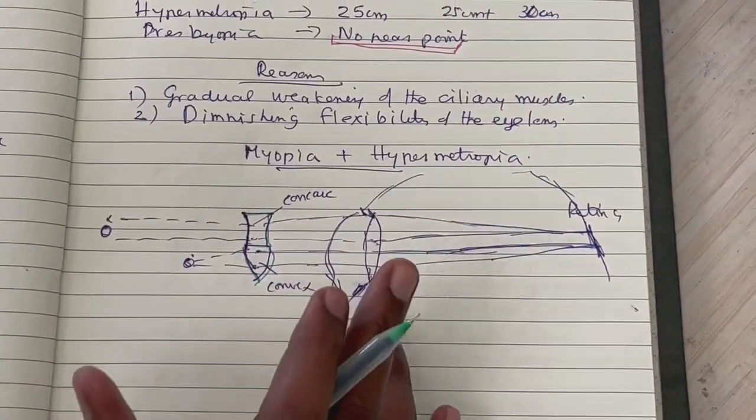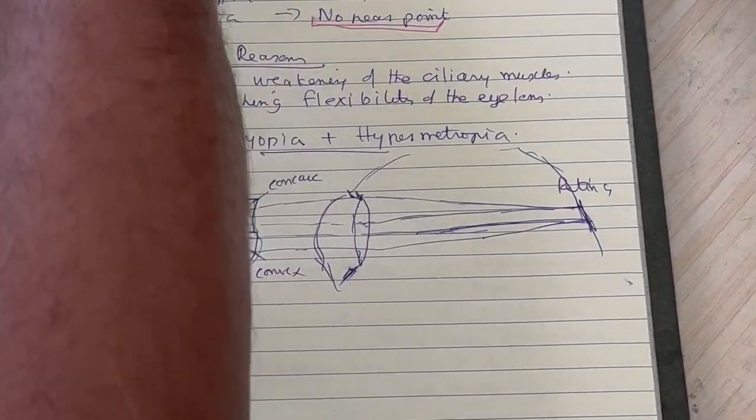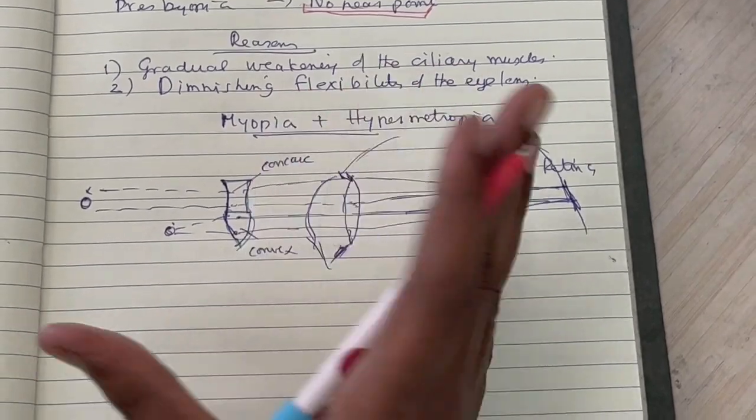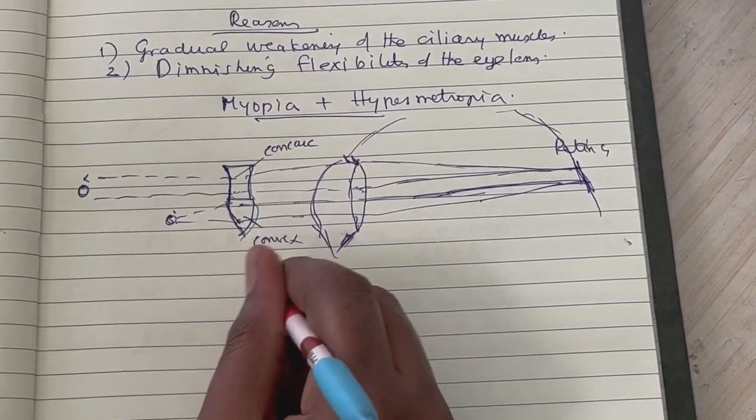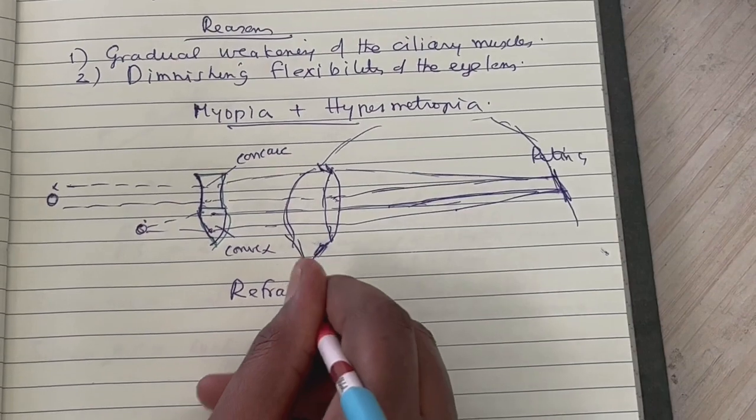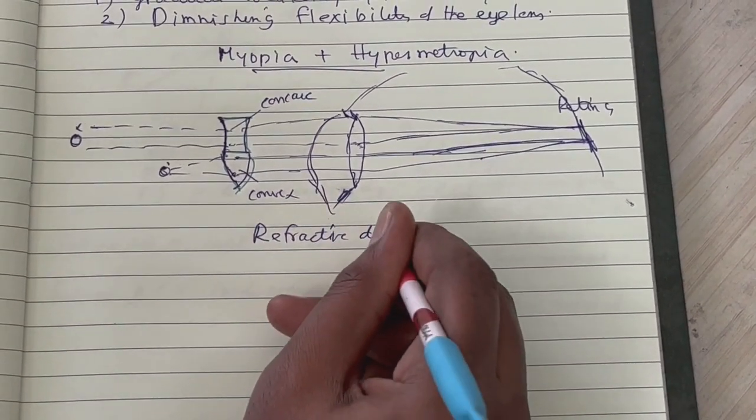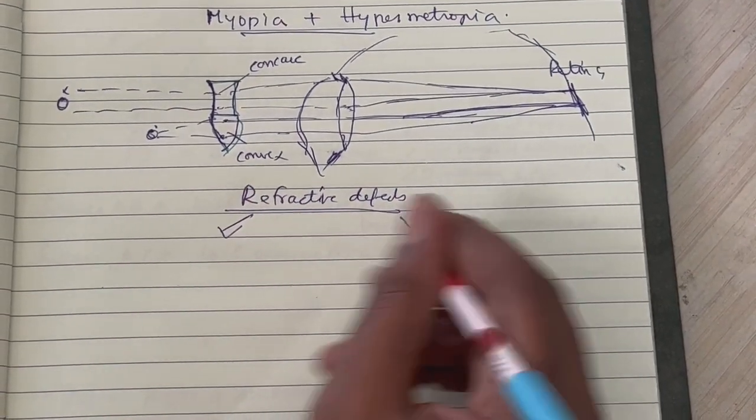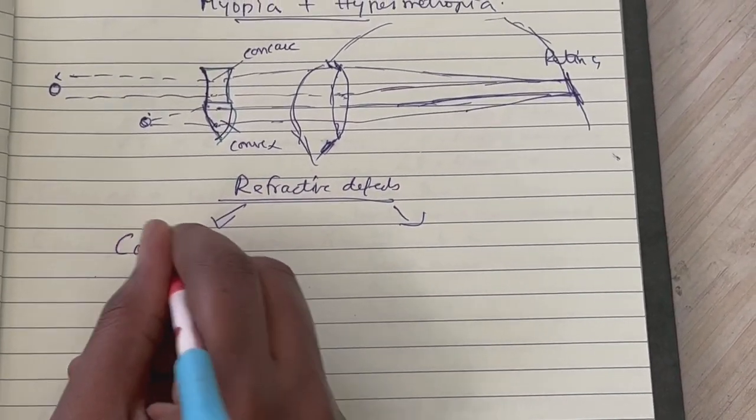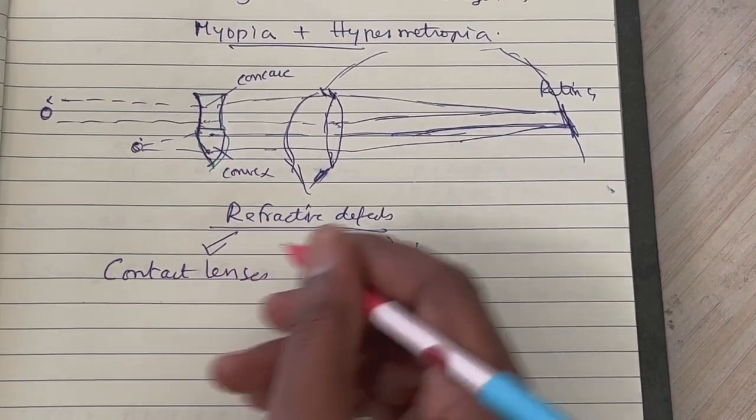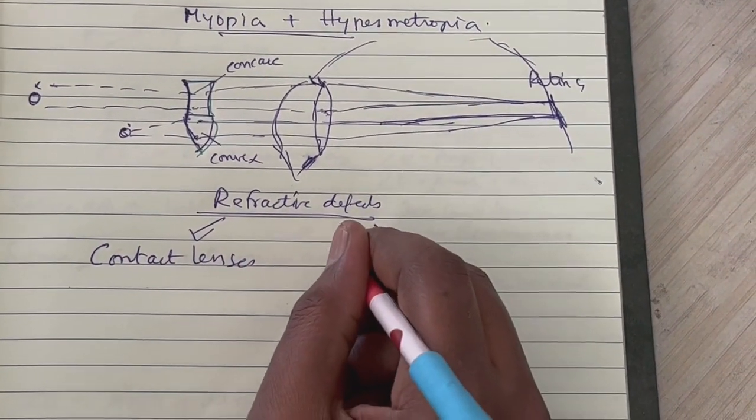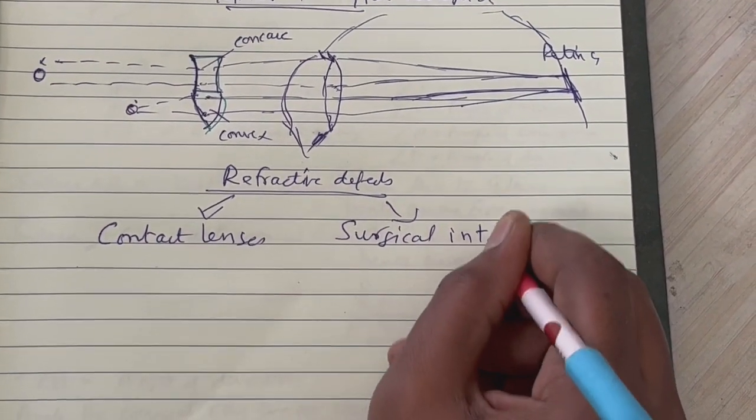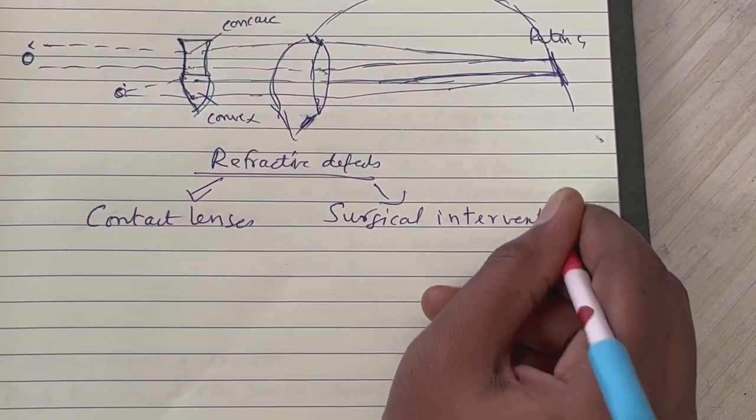To conclude this section, there could also be refractive defects of the human eye lens. So how do you solve such conditions? There are two ways to solve such conditions - you can use contact lenses or maybe you have to go for a surgical procedure - surgical intervention. Thank you.